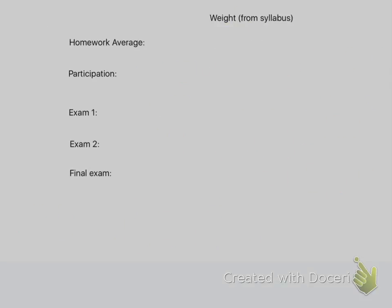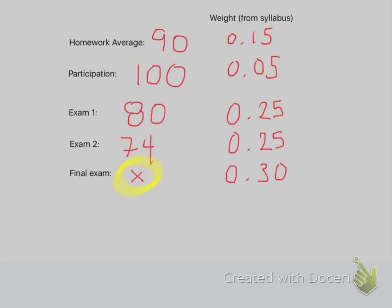Next, I'm going to show you, at the end of the semester, how to figure out what grade you need to get on the final exam in order to get maybe a B. So it's going to start off the same way. You need to figure out the weights of everything. So this is, again, from the syllabus. Put those as decimals. And then you need to fill in all of your scores.